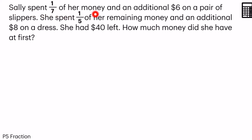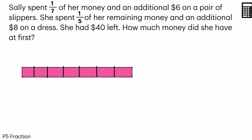Sally spent 1/7 of her money and an additional $6 on a pair of slippers. For the first part of my model, I'm going to draw 7 parts: 1, 2, 3, 4, 5, 6, 7. She spent 1/7 of her money and an additional $6. This additional $6 does not sum up to become 1 unit, so I will cut it like that and write 6 inside. This part is spent on slippers.